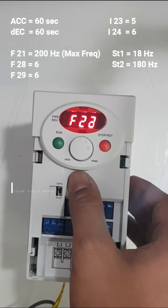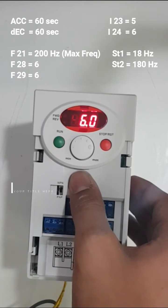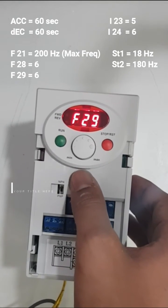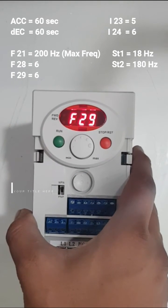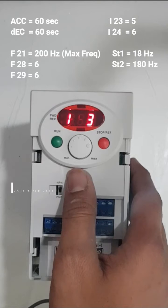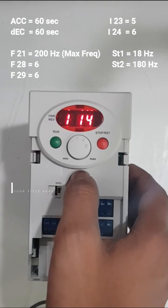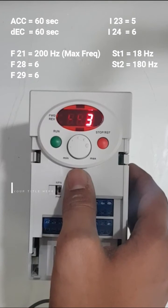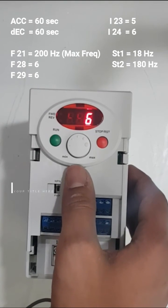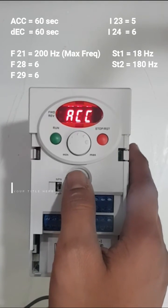Go up, go to F28 and make it 6. Press up, F29 make it 6, and then now press right, go to I23. Enter, make it 5. I24, make it 6, and press right, go up.